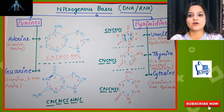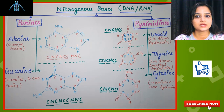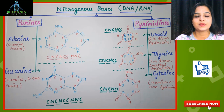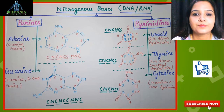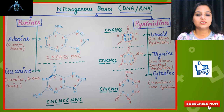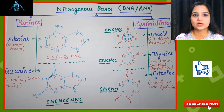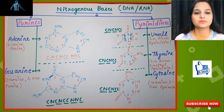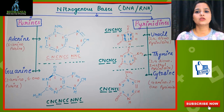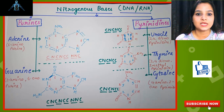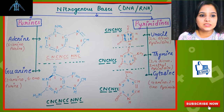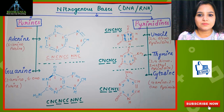Here is the chart of nitrogenous bases present in DNA and RNA. As I told you in the previous video, DNA stands for deoxyribonucleic acid and RNA stands for ribonucleic acid. In the case of DNA, deoxyribose sugar is present, and in the case of RNA, ribose sugar is present. Now let's look at the division of nitrogenous bases: purines and pyrimidines.